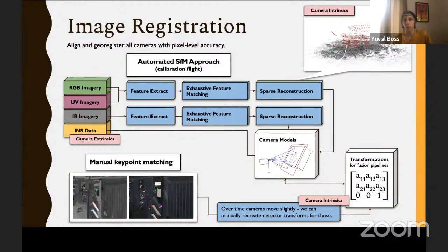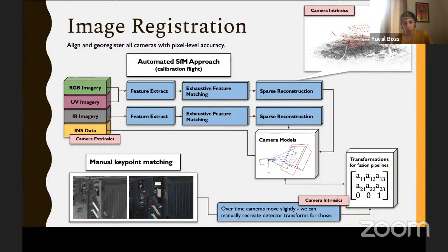We combine the camera intrinsics with the camera extrinsic INS data, which allows us to develop camera models telling us exactly where each camera is pointed. That allows us to both align the images and geo-register them to know where they are on Earth. Over time there's a bit of drift in the cameras. For our detection pipelines we really need pixel-level precision, so we can take new calibration data and manually select points in both photos to generate a transformation that works well — though this doesn't provide all the information that the full camera model does.